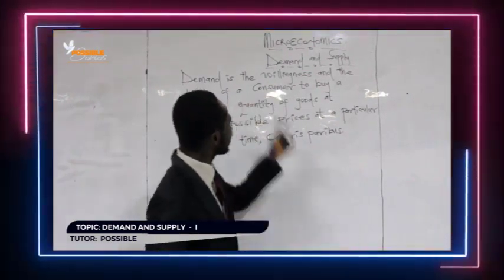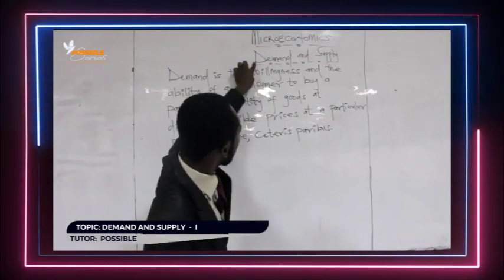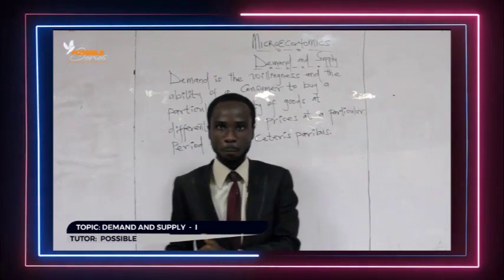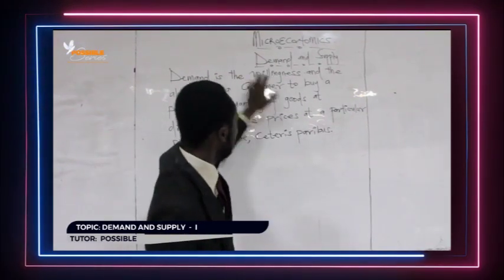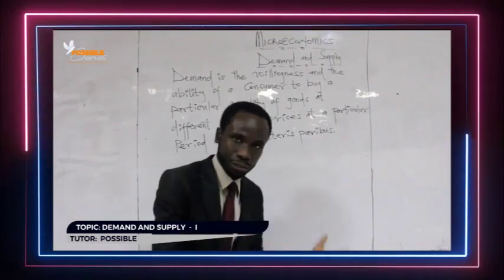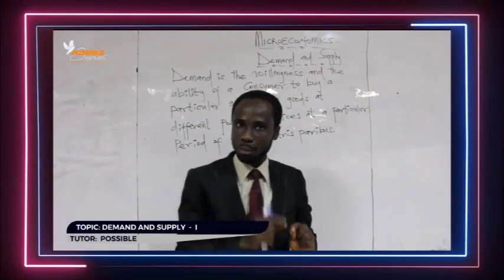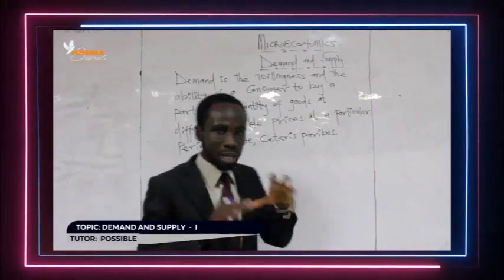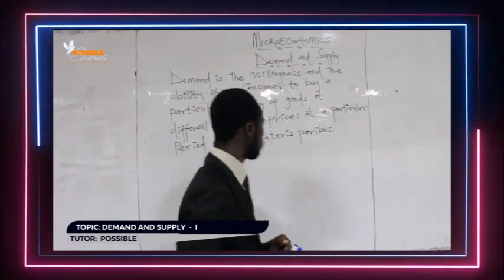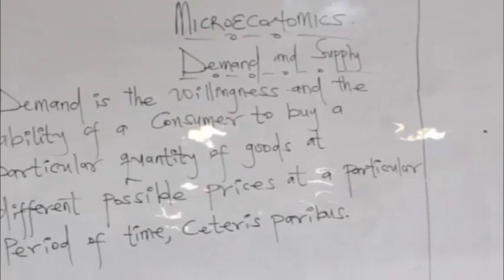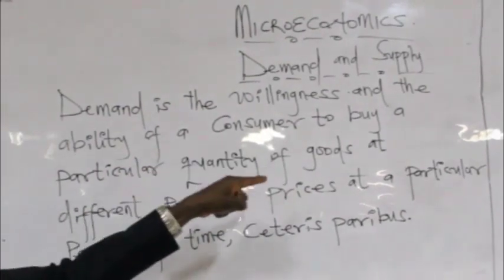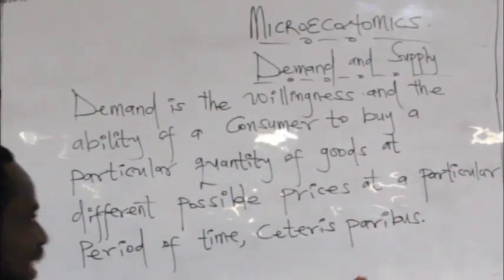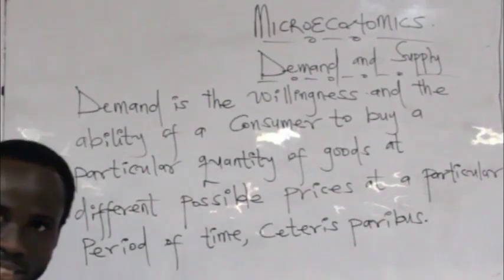Demand focuses on the consumer, and supply focuses on the supplier or the seller. We are going to learn demand first, and when we are done with demand, we will transfer that knowledge into supply. Demand is a willingness and the ability of a consumer to buy a particular quantity of goods at different possible prices at a particular period of time, all things being equal.